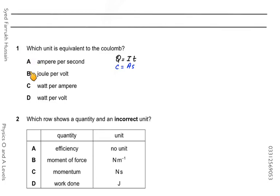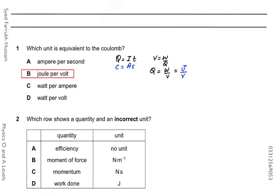Since option A is incorrect, we check the remaining options using the definition of electromotive force: V = W/Q, so Q = W/V. This means joule per volt is equivalent to coulombs. Therefore option B is the correct answer.